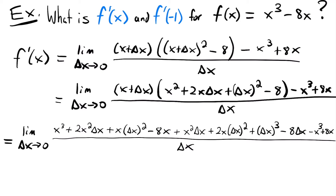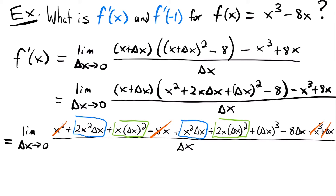Now let's look for terms that cancel. We have a positive x cubed and a negative x cubed — those cancel. We also have negative 8x and positive 8x — those cancel. Then I see like terms: there are two x squared delta x terms (2x squared delta x and x squared delta x) and two x delta x squared terms (x delta x squared and 2x delta x squared). I'll box those in as similar terms.